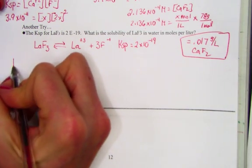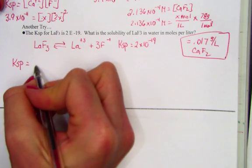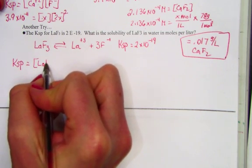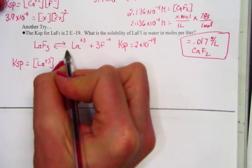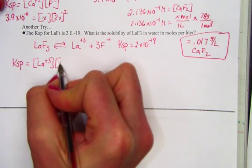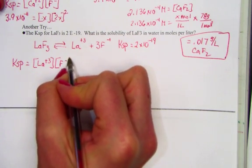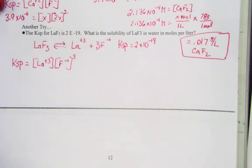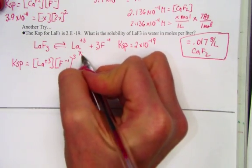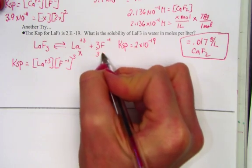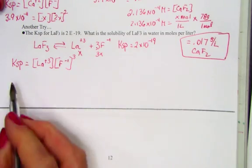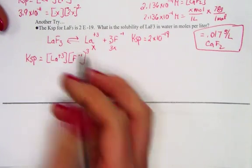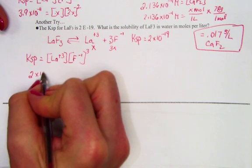So here's the expression. Ksp is equal to the concentration of the positive ion raised to the first power, times the concentration of the negative ion raised to its power of 3. Why don't we call lanthanum x. Fluoride will have to become 3x, and we'll set that equal to the Ksp constant.